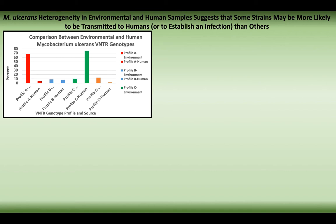Another reason why we need to be researching M. ulcerans is that heterogeneity in environmental and human samples suggests that some strains may be more likely to be transmitted to humans than others. We have found that there are some strains in the environment that may be more likely to be transmitted to humans than others. I'll talk about the preliminary data we have, but first I need to discuss the method we used, which is variable number of tandem repeat profiling.